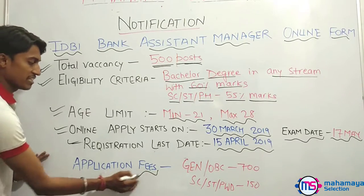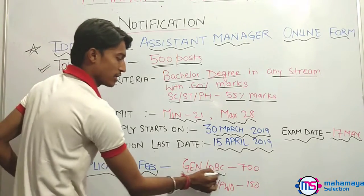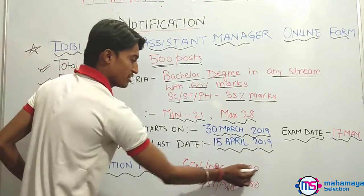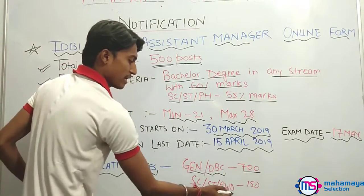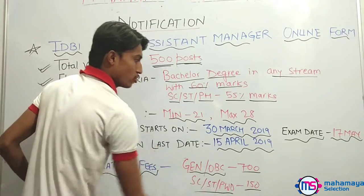If you talk about application fees, for General and OBC candidates you can apply for 700 rupees, and for SC/ST/PWD candidates you can apply for 150 rupees.